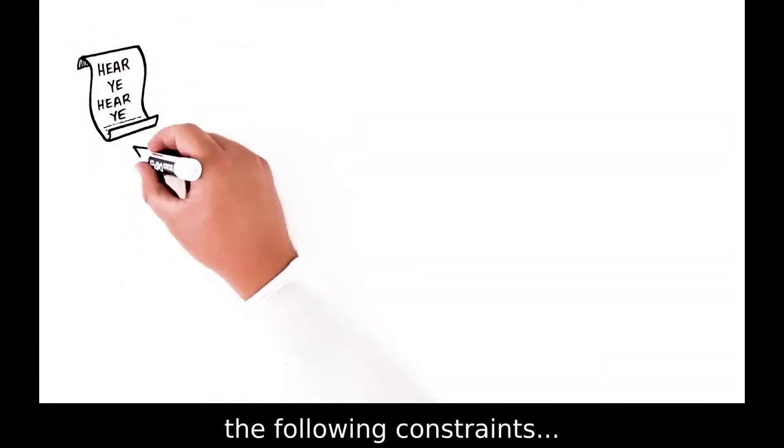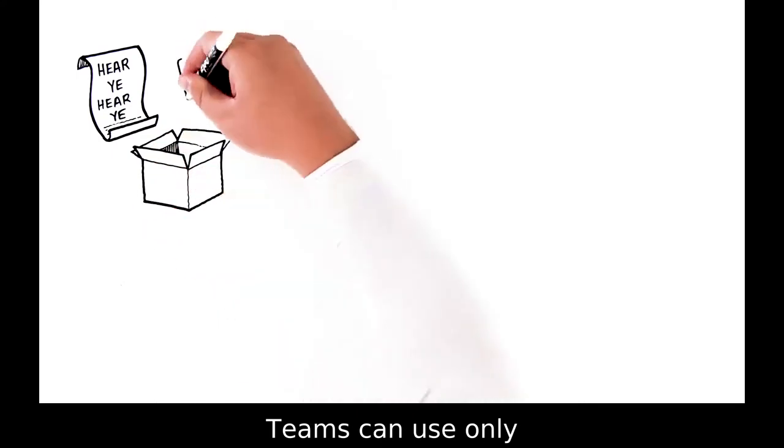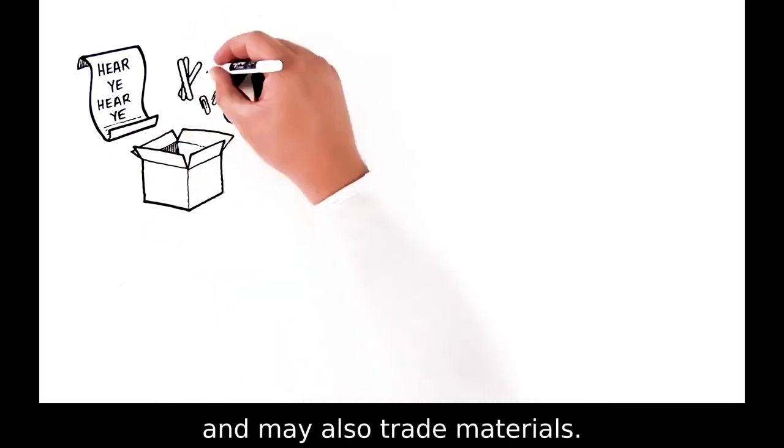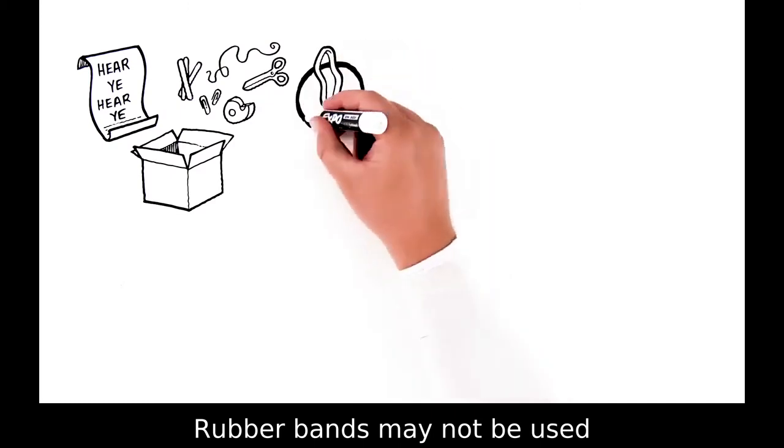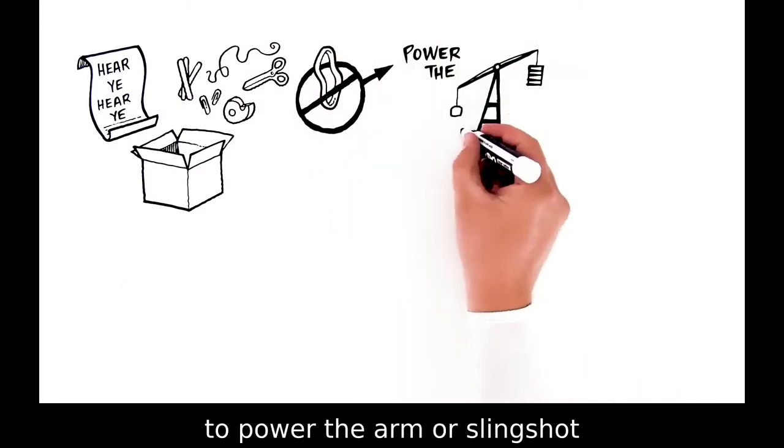Teams will operate under the following constraints. Teams can use only the materials provided and may also trade materials. Rubber bands may not be used to power the arm or slingshot the marshmallow.